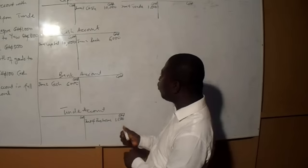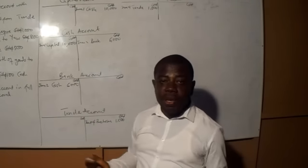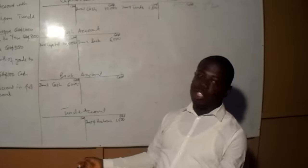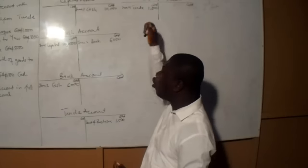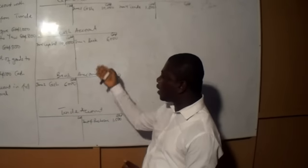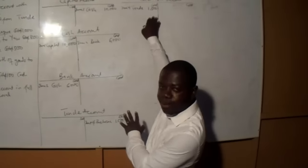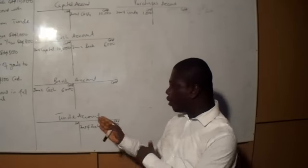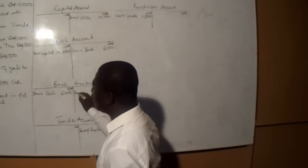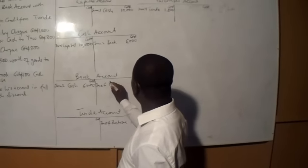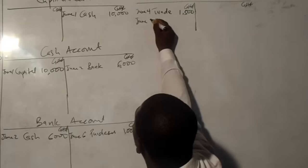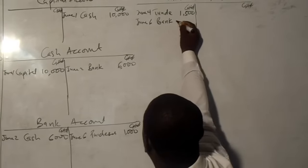We ask: which one are we debiting? We already have bank account and purchases account. Purchases account is an expense account — the rule says debit all expenses, so we debit purchases account, and automatically we credit bank. Looking at it from the bank side: bank is a real account, and we credit what goes out; 1,000 is going out of our bank account. So we credit bank account on June 6 in the name of purchases, 1,000. We debit purchases account on June 6 in the name of bank, 1,000.